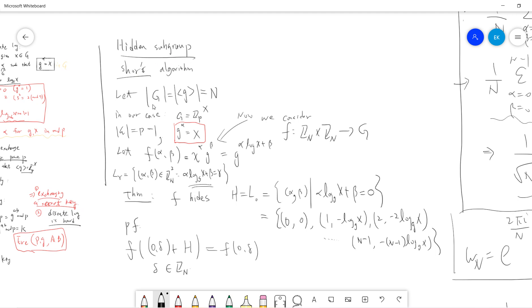Discrete log problem: our capital G has order n. For example, if G is Z_p cross, the multiplicative group, then G will be p minus one because zero does not have inverse. We know g and x but we don't know alpha.